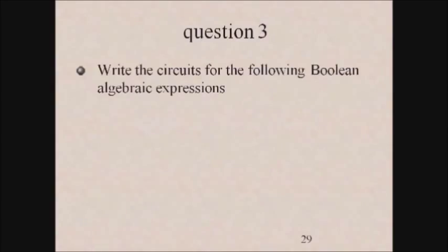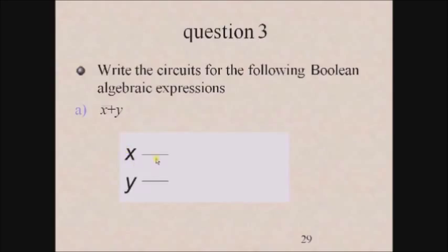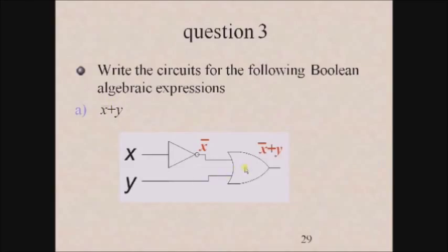Write the circuits for the following Boolean algebraic expressions. For the expression x complement plus y: x and y are two variables. To get x complement, use a NOT gate with input x to get x bar. Then give x complement and y as inputs to an OR gate to get the output x complement plus y.